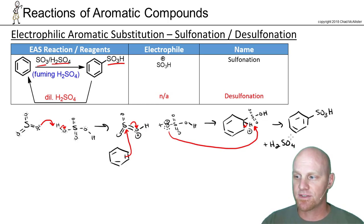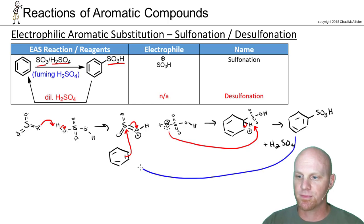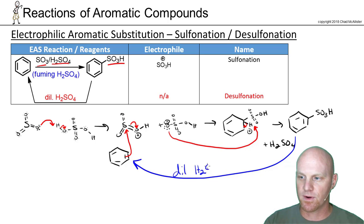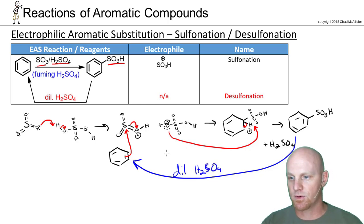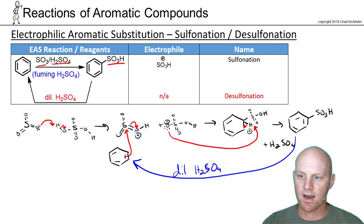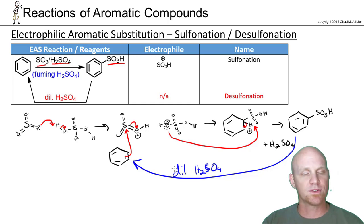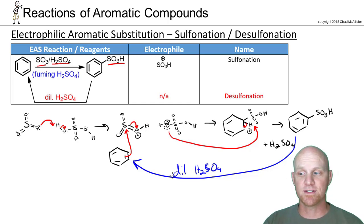This reaction is actually reversible — all we do is add dilute H₂SO₄ to reverse it, and the SO₃H comes right back off. When we talk about synthesis, we'll find out how useful this is as a blocking agent.